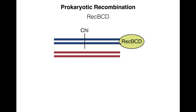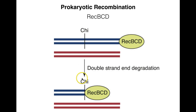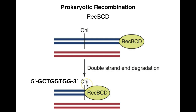Strand degradation proceeds until it reaches the chi-site, the crossover hotspot instigator. The chi-site has a characteristic sequence — five-prime to three-prime GCTGGTGGG — and is found very frequently in the E. coli genome, approximately once every 5,000 base pairs, which is more than we'd expect if it were just a random site.